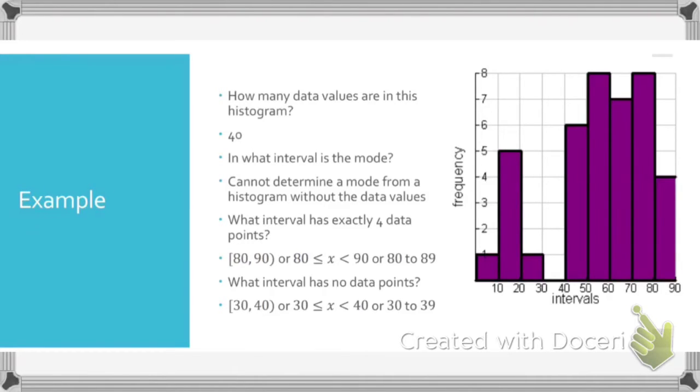So for the first one, it's 1, this one is 5, because as you can see it stops at 5, this one is 1, obviously that's 0, this one is 6, this one is 8, this one is 7, this one's up at 8, and this one is at 4. So when you add all of them up, you should get 40.